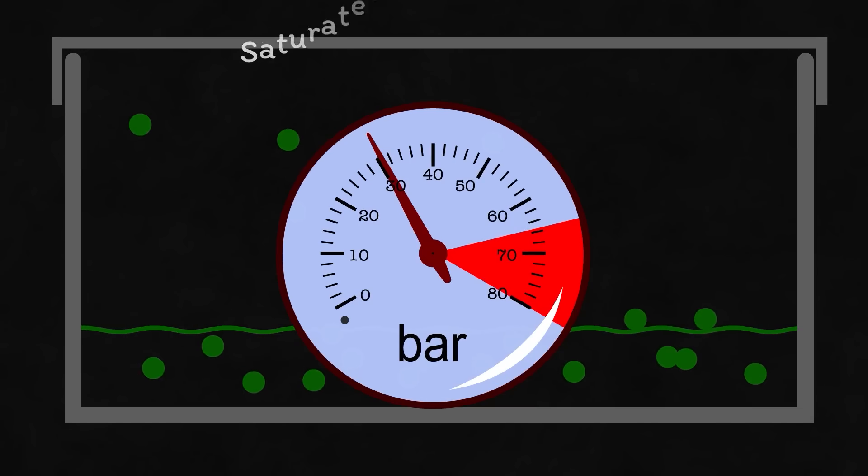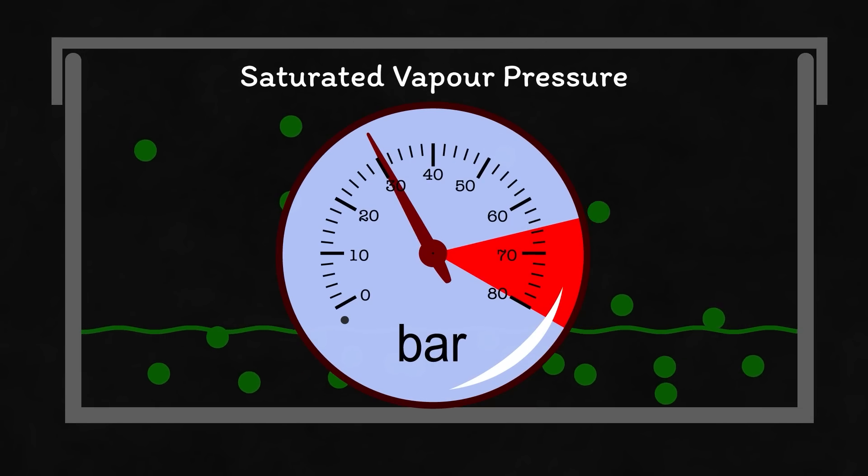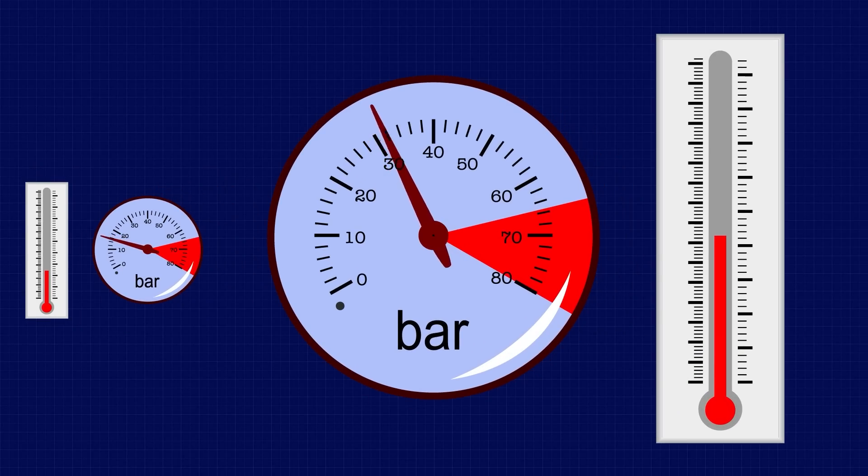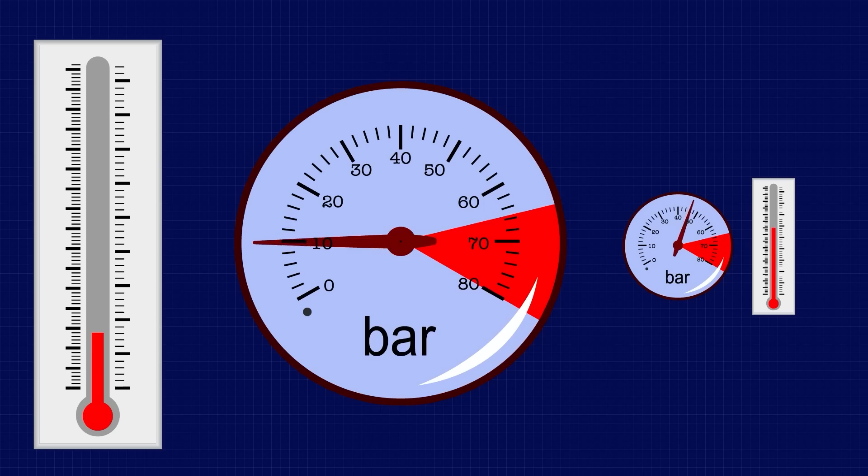The pressure that this occurs at is known as the saturated vapor pressure and it will vary for each gas depending on the temperature. At higher temperatures the molecules will all have more energy so the saturated vapor pressure will be higher. Likewise at lower temperatures the molecules will all have less energy so the saturated vapor pressure will be lower.